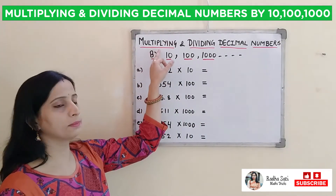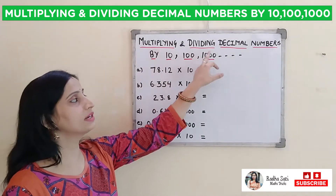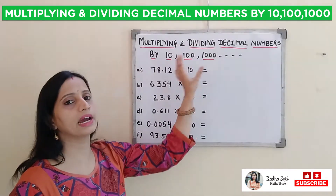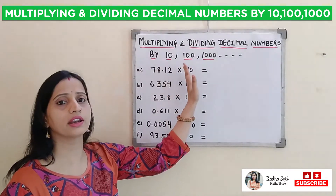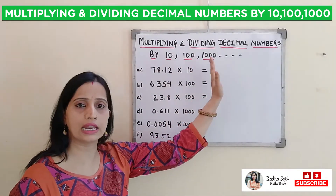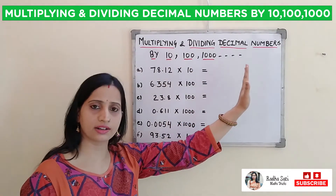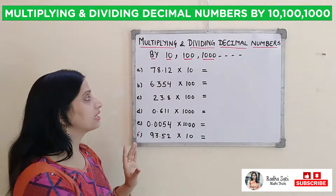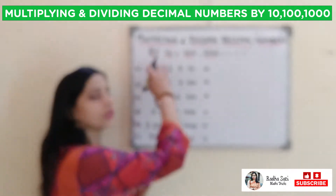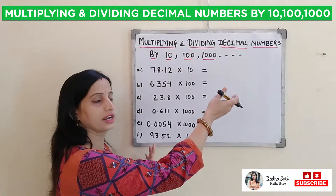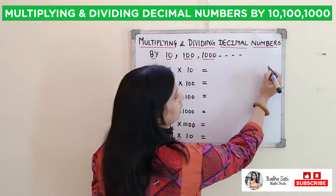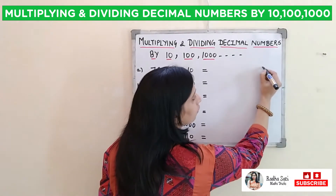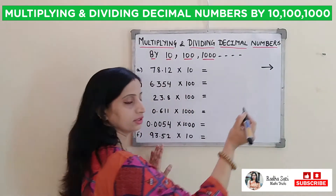Whenever we multiply any decimal number by 10, 100, 1000, etc., our decimal will shift to the right side. It will always shift to the right hand side.